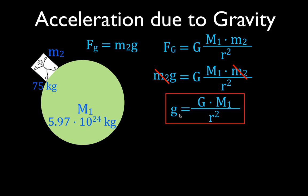In this case, M1 is the Earth's mass: 5.97 times 10 to the 24th kilograms. For R, you might think it's zero because the person is right at the surface, but we use the distance from the center of mass of the object — which is the center of the Earth. Since we want to calculate it at the surface, that distance is the radius of the Earth: 6,371 kilometers. So G is the acceleration due to gravity, the gravitational constant is 6.67 times 10 to the minus 11 newton meters squared per kilograms squared, and we divide by the square of that radius.